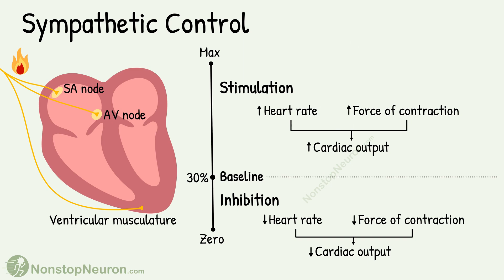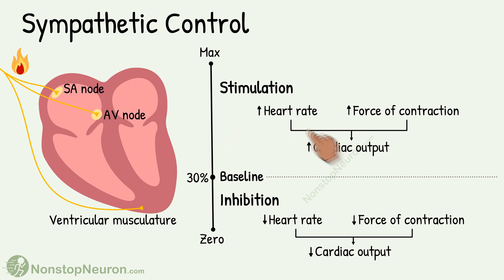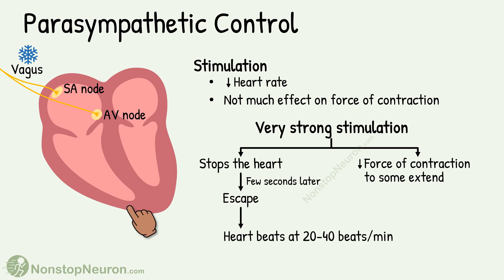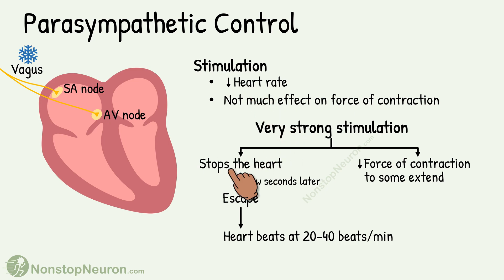Let's have a quick summary. Sympathetic nerves supply the SA node, AV node, and ventricular musculature — their stimulation increases cardiac output and inhibition decreases it. Parasympathetic nerves supply mainly the SA node and atria, but not much the ventricular muscles. Stimulation decreases heart rate, and very strong stimulation can even stop the heart for a few seconds.